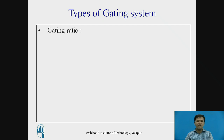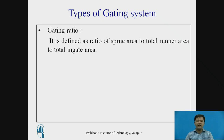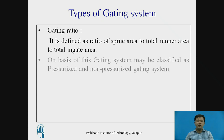Now we will understand the different types of gating system. First, we will understand what is the gating ratio. The gating ratio is defined as the ratio of sprue area to total runner area to total ingate area. On the basis of this ratio, the gating system may be classified as pressurized gating system and non-pressurized gating system.